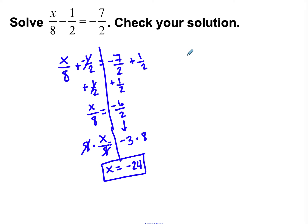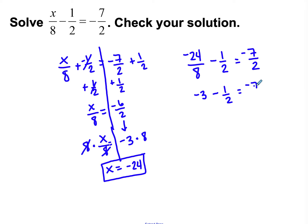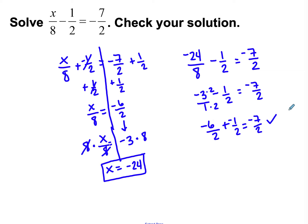I need to check my solution and show the work: negative 24 divided by 8 minus 1 half equals negative 7 halves. Negative 24 divided by 8 is negative 3, so negative 3 minus 1 half. I convert to a common denominator: negative 3 over 1 times 2 gives negative 6 halves, minus 1 half equals negative 7 halves. Negative 6 halves plus negative 1 half is negative 7 halves — checked and correct.